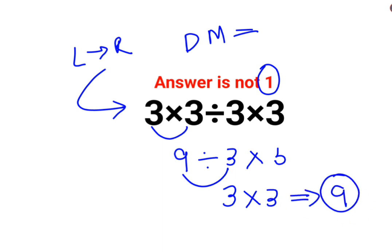I hope you have understood how to solve these kind of questions. Now let's do it the other way around. If it was 3 divided by 3 multiplied by 3 divided by 3, let's understand this.